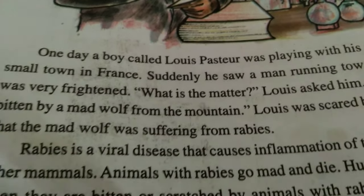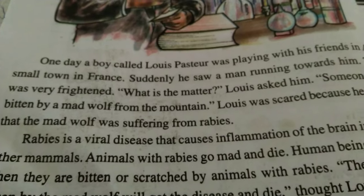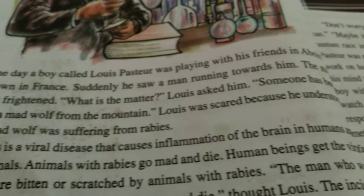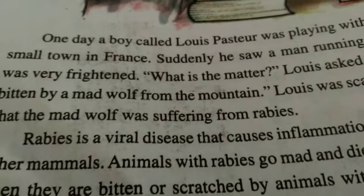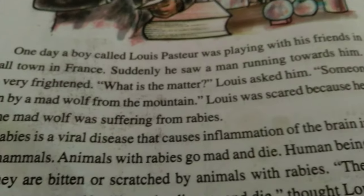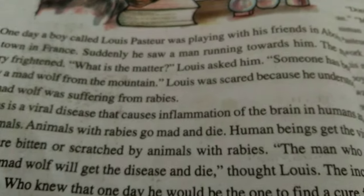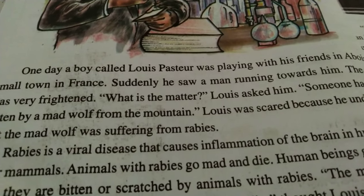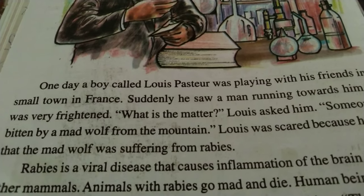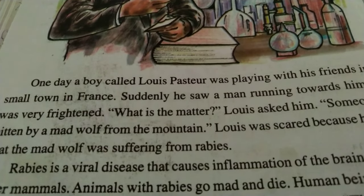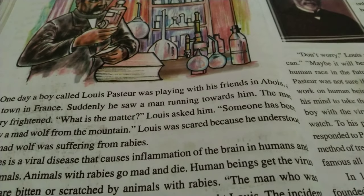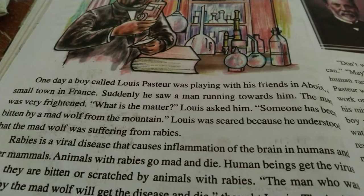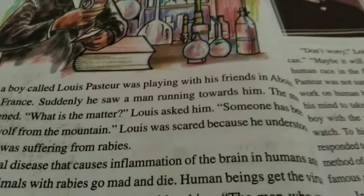Rabies is a viral disease that causes inflammation of the brain in humans and other animals. Animals with rabies go mad. Human beings get the virus when they are bitten or scratched by an infected animal.